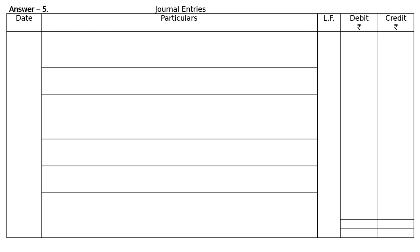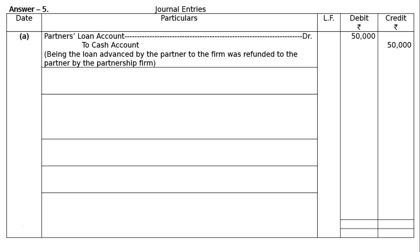This is question 5. We have to pass journal entries for the following transactions at the time of dissolution of the firm. Part A: A partner's loan of rupees 10,000 advanced by a partner to the firm was refunded. Drawing the proper format — partner's loan account debited to cash account, being the loan advanced by the partner to the firm was refunded to the partner by the partnership firm. Amount: rupees 50,000 each.